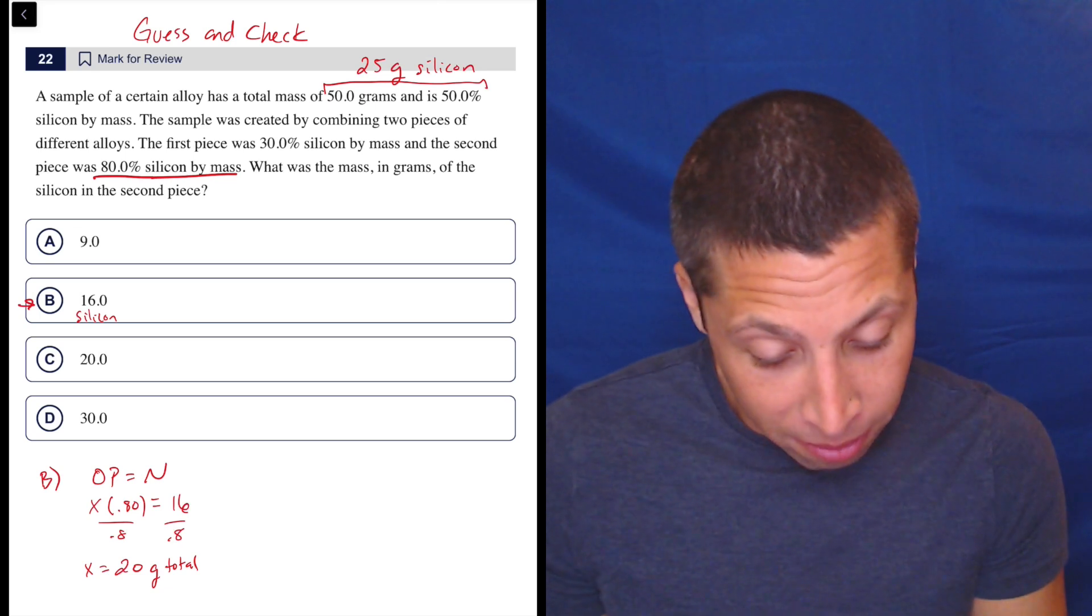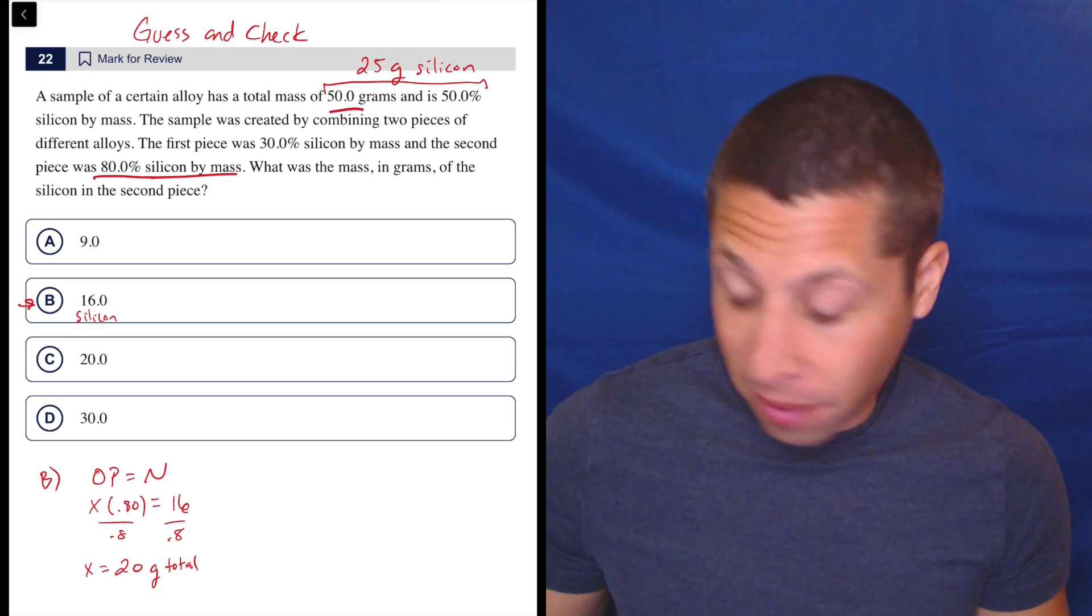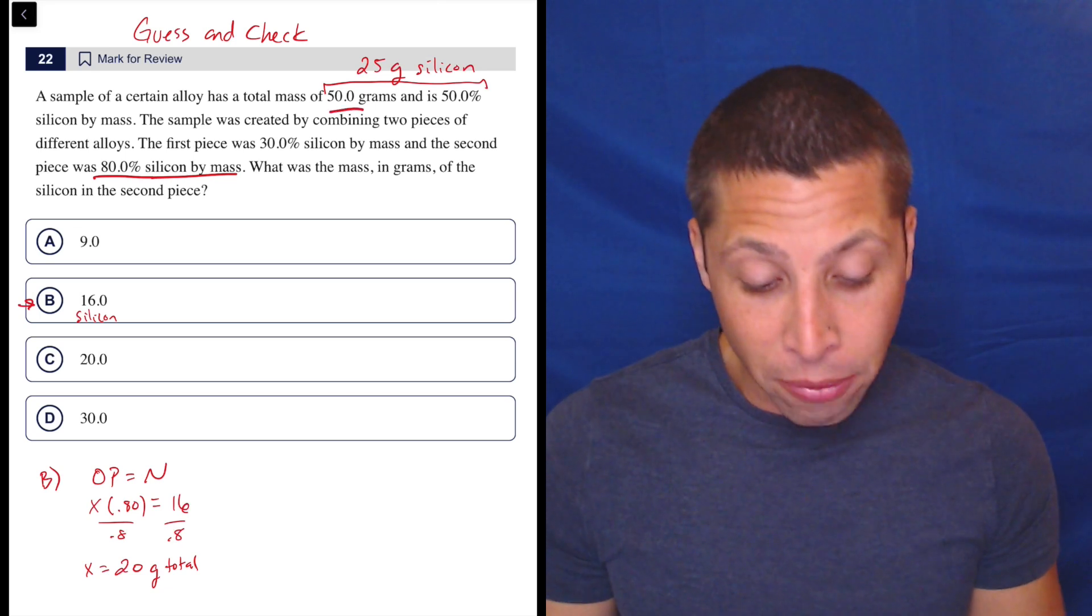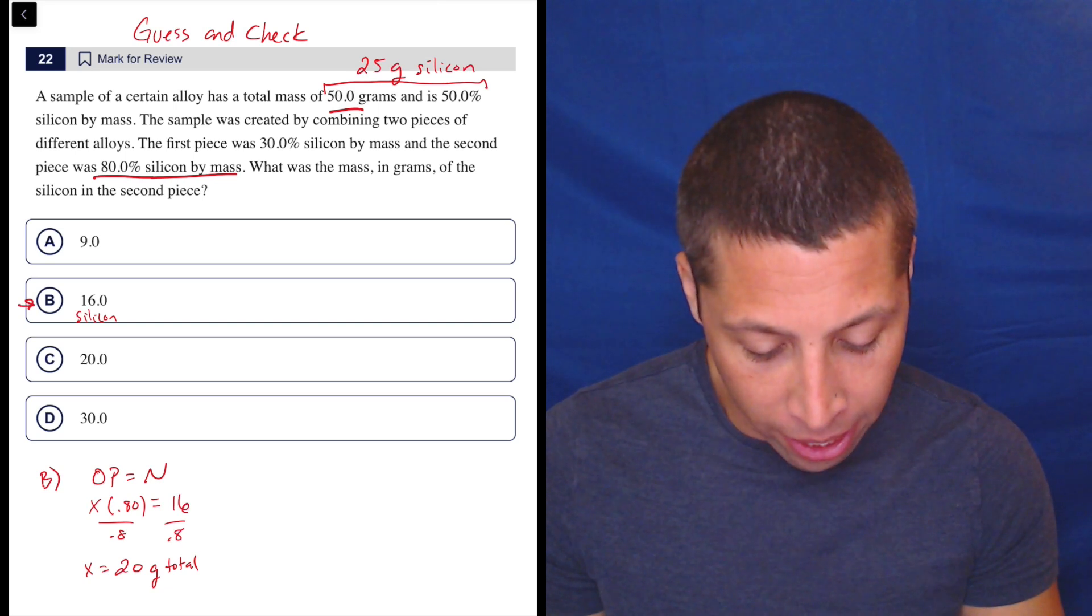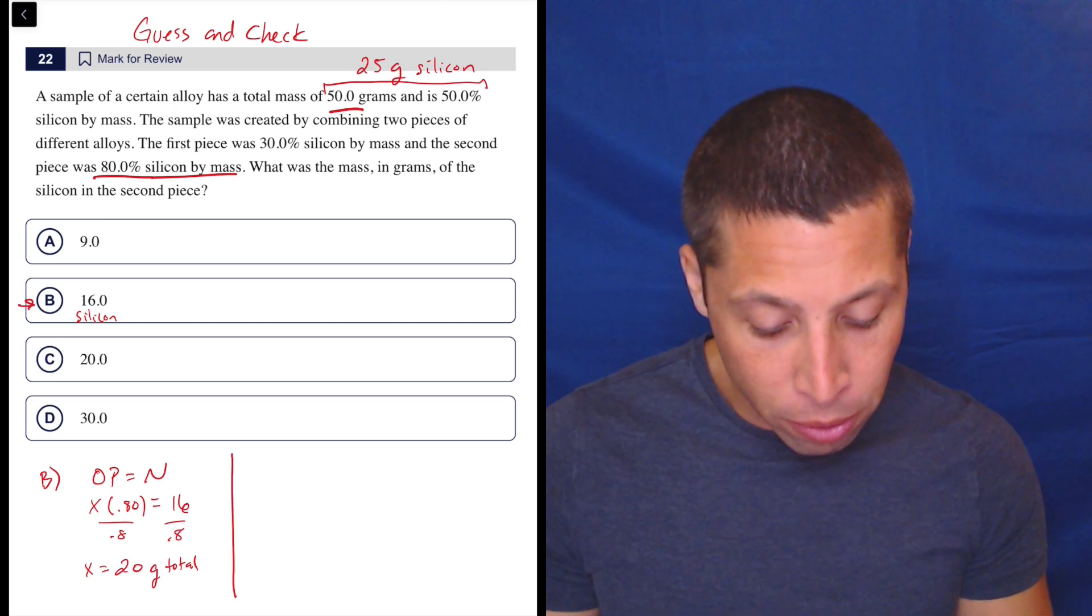Who cares? Well, they told me there's 50 grams total of everything. So plus 25 grams of silicon. So I can go two ways with this. Basically, I can say, all right, if there's 50 grams total, that means the other piece has to have 30 grams of all sorts of stuff.